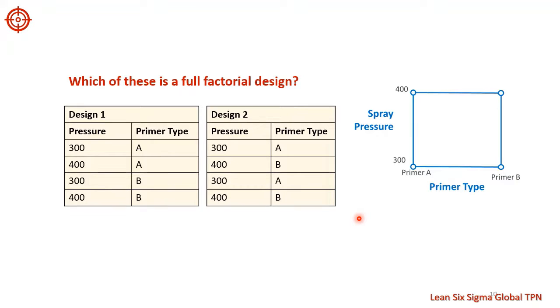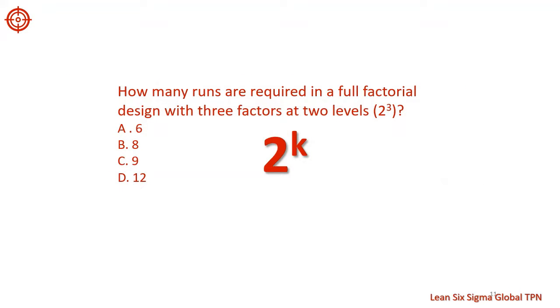Recall that a 2 power 2 design is a square, where each corner of the square represents a treatment combination. With two factors at two levels, a 2 power 2 design, the full factorial design requires 4 runs.